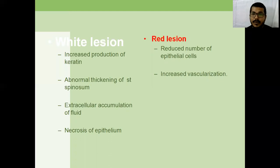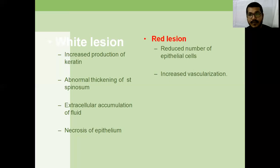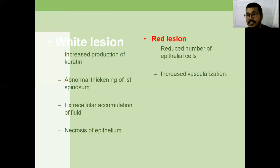The reasons for red lesions in the oral cavity are either a reduced number of epithelial cells or increased vascularization. In white lesions, the reason is increased keratin production or abnormal thickening of the stratum spinosum layer — known as acanthosis. In red lesions, there is a reduced number of epithelial cells, termed acantholysis. So acanthosis is the term for white lesions and acantholysis is the term for red lesions.